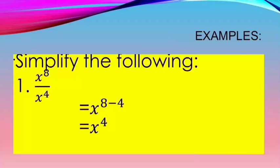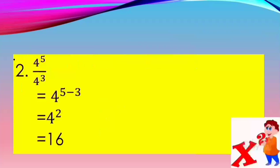Examples. Number 1: Simplify x to the power of 8 divided by x to the power of 4. This equals x to the power of 8 minus 4, which equals x to the power of 4. Number 2: 4 to the power of 5 over 4 to the power of 3 equals 4 to the power of 5 minus 3, which equals 4 to the power of 2, which equals 16.